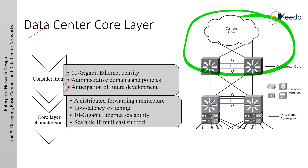Regarding administrative domain and policies: separate campus and data center cores help isolate the campus building distribution layer from the data center aggregation layer for troubleshooting, maintenance, administration, and implementation of policies using Quality of Service and ACLs. Regarding anticipation of future deployment: the impact that could result from implementing a separate data center core layer at a later date might make it worthwhile to install it at the beginning. The data center typically connects to the campus core using Layer 3 links, and data center network addresses are summarized into the campus core. Key data center core layer characteristics are distributed forwarding architecture, low-latency switches, 10 Gigabit Ethernet scalability, and scalable IP multicast support.